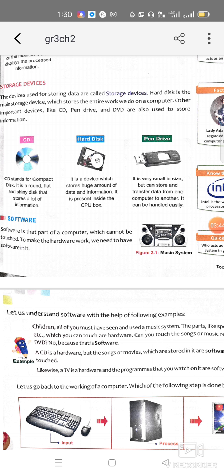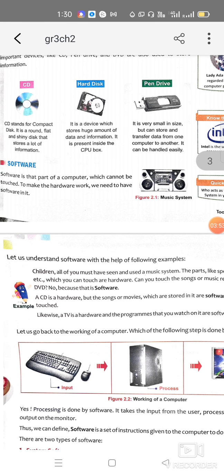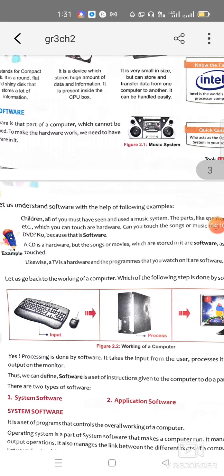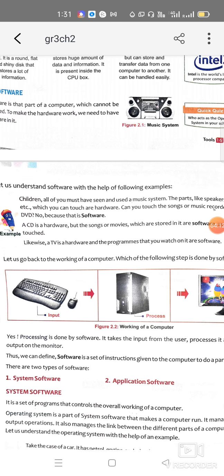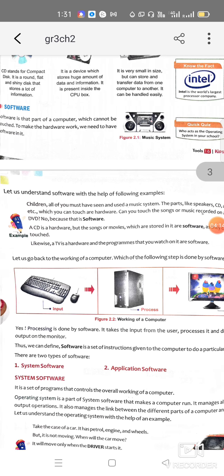Some softwares are used to support hardware, some are used for controlling the functioning of hardware, and some are used for operating the computer system. Here they give the example of a music system: you can see or touch the music system, but you can't see or touch the songs which it plays. I hope the concept of software is now clear.